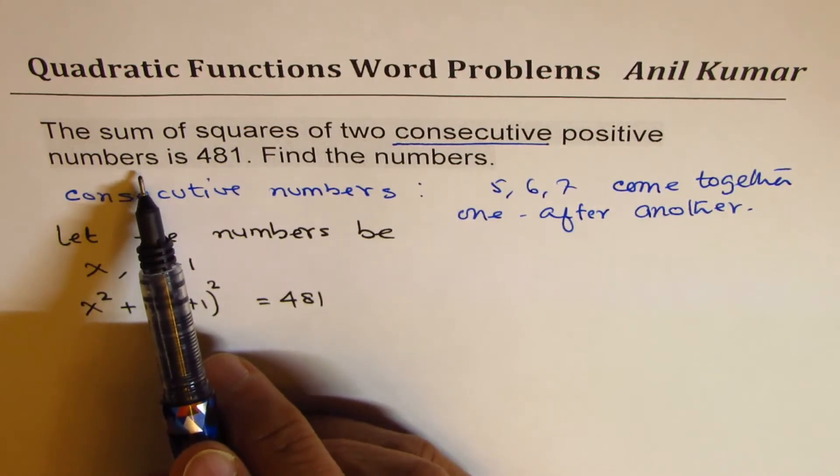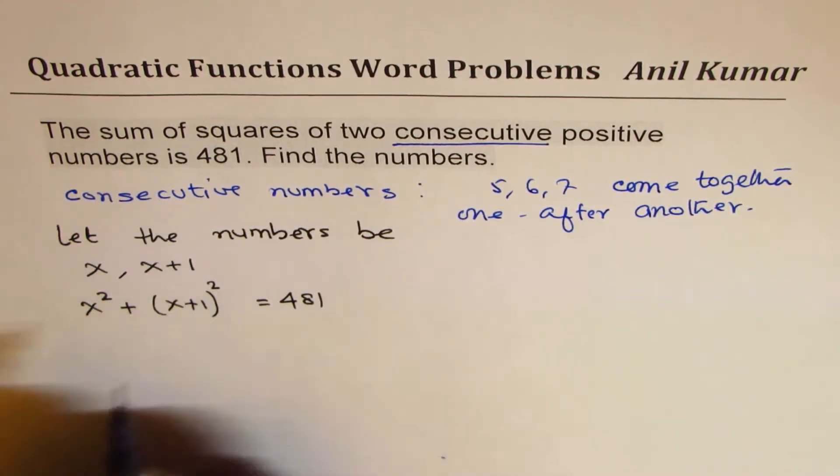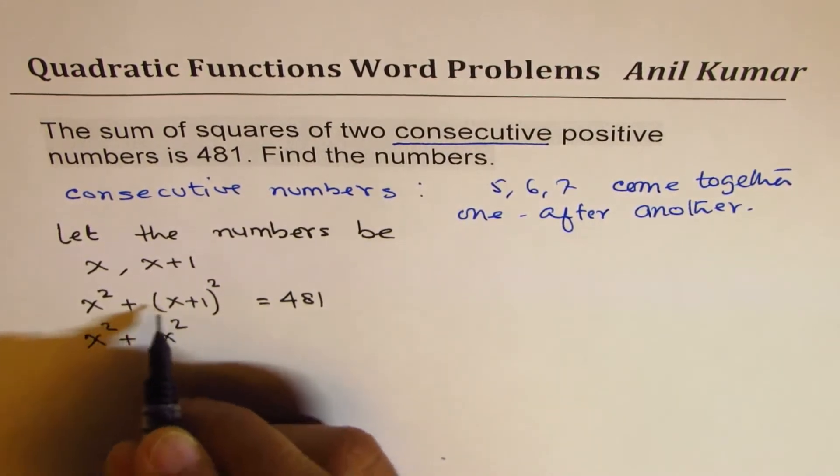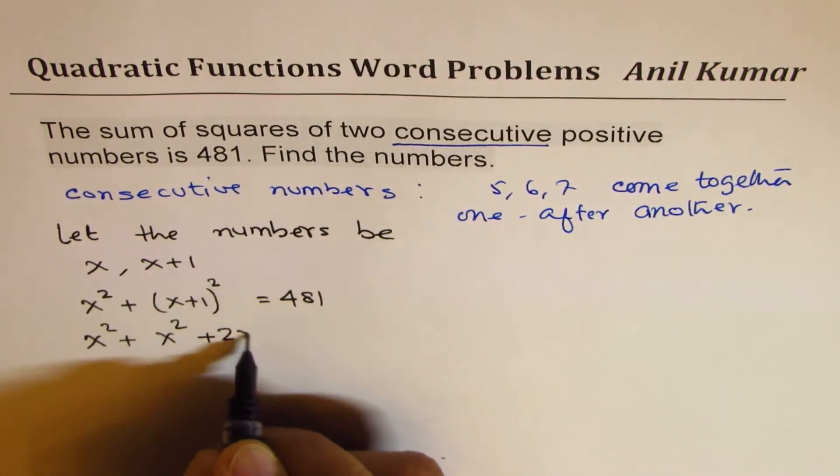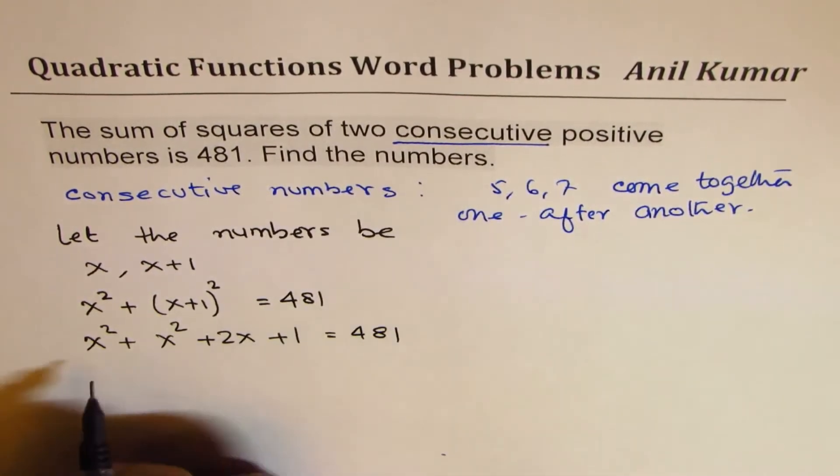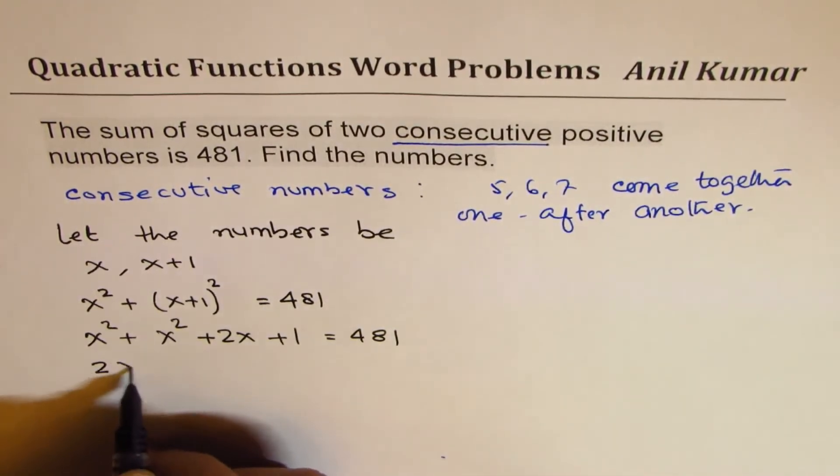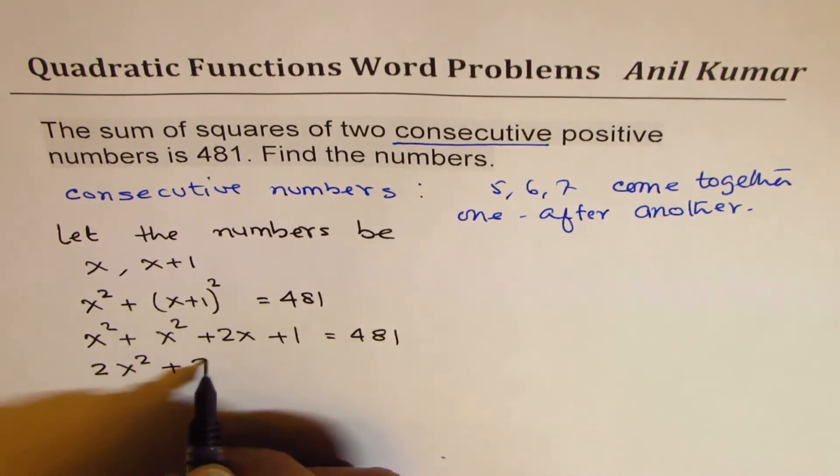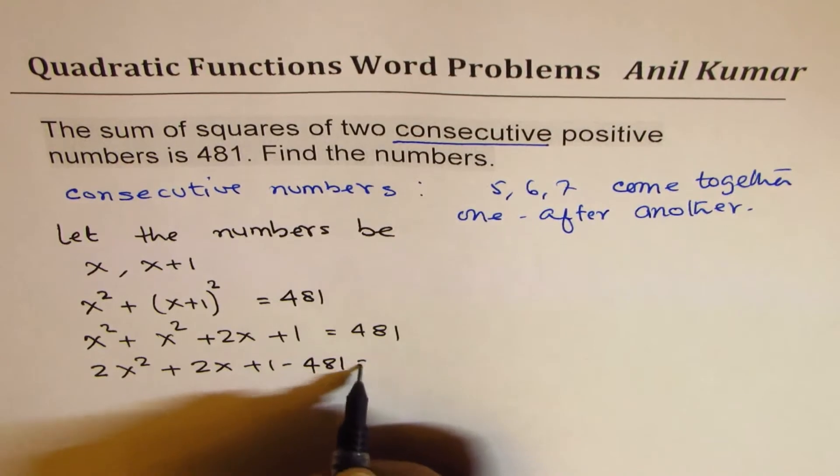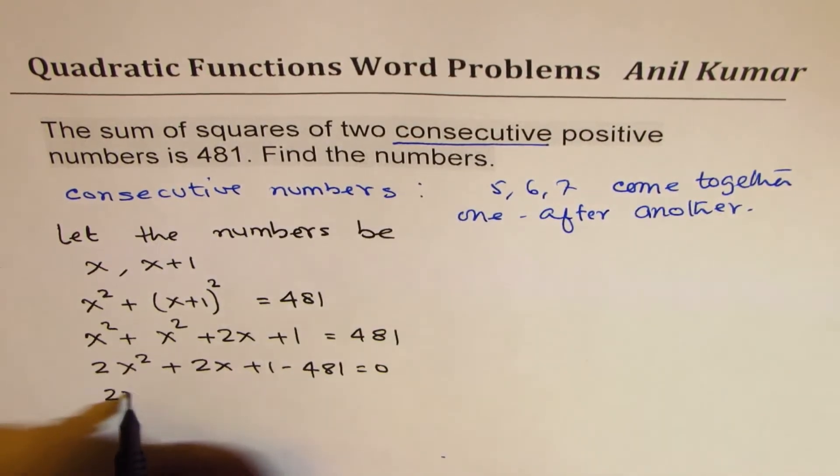When it comes to numbers, the preferred method will be to factor. So let's begin. X squared plus expand this: x squared plus 2x plus 1 equals 481. Bring all the terms together. Combine x squares, so we get 2x squared plus 2x plus 1 minus 481 equals 0.